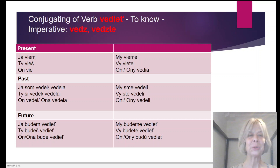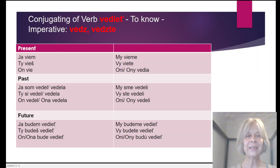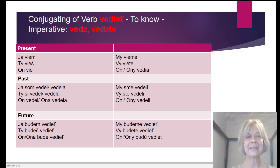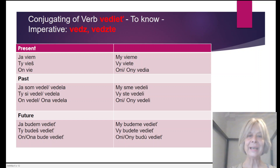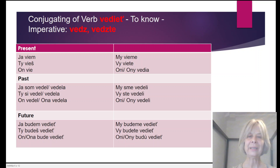It's a little difficult. Past tense negative: Ja som nevedel. Ja som nevedela. Ty si nevedel. Ty si nevedela. On nevedel. Ona nevedela. My sme nevedeli. Vy ste nevedeli. Oni nevedeli.